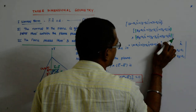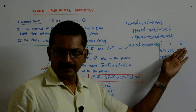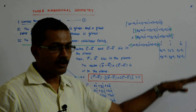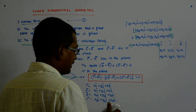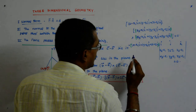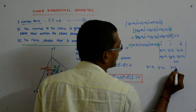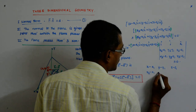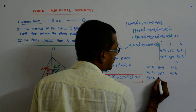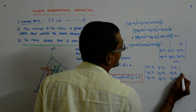When we take the dot product, the coefficients of i, j, k go and occupy the corresponding positions in the determinant, and the whole expression equals zero. So we are left with the 3×3 determinant: (x minus x1), (y minus y1), (z minus z1) in the first row; (x2 minus x1), (y2 minus y1), (z2 minus z1) in the second row; (x3 minus x1), (y3 minus y1), (z3 minus z1) in the third row — all equal to zero.